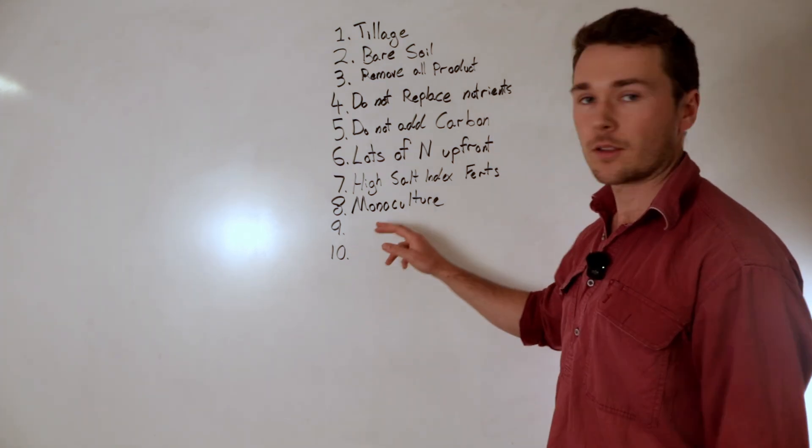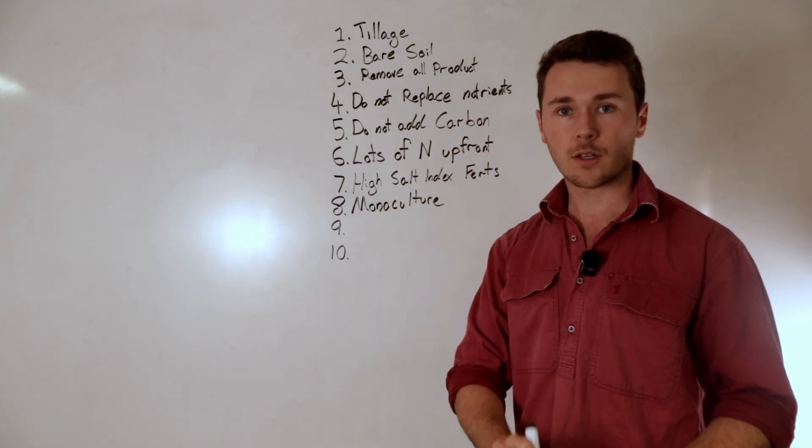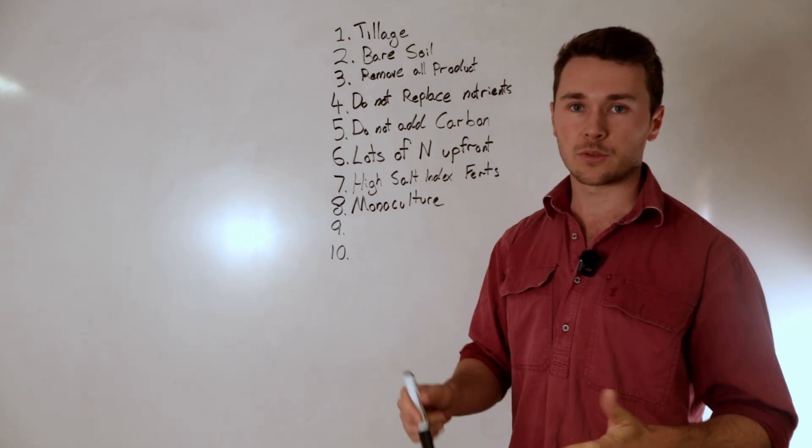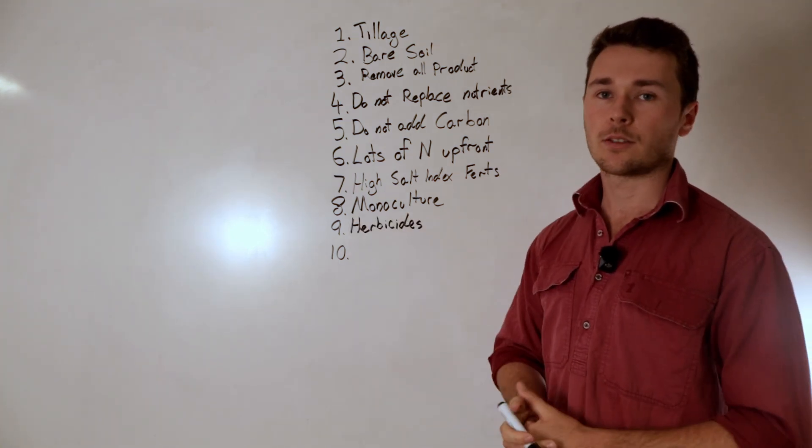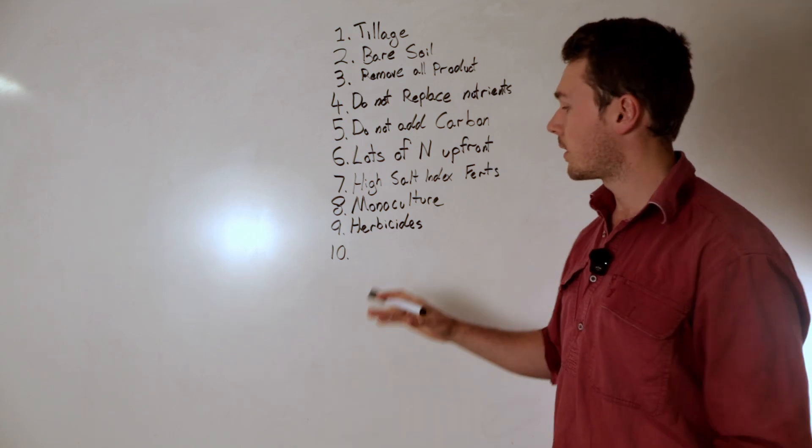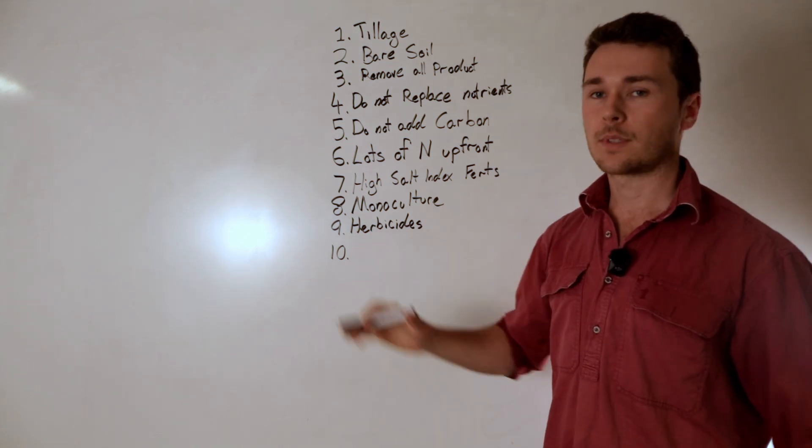So next on our list is applying a lot of herbicides. Herbicides are a great way to kill a lot of microbes as well as lock up key minerals like manganese. Now ultimately you want to be applying as much herbicides as possible. Making sure to probably using more than the required rate. Just douse the thing in herbicides.